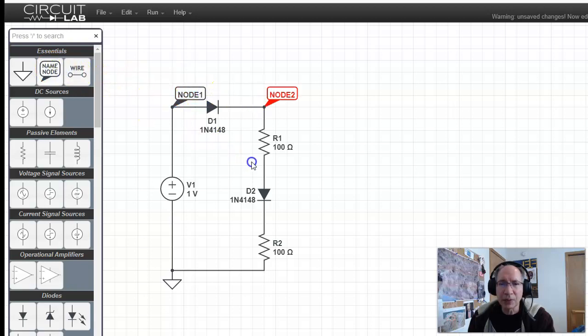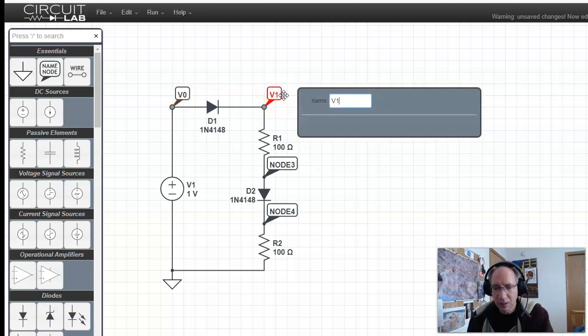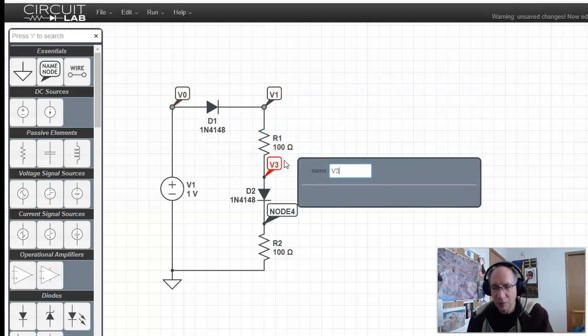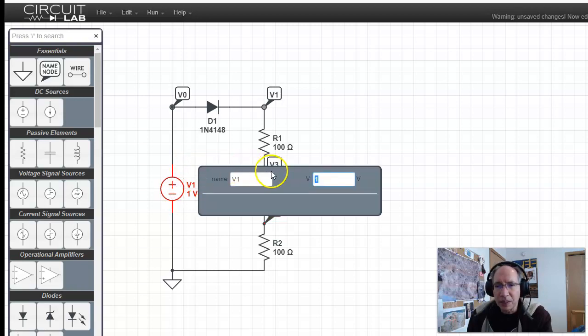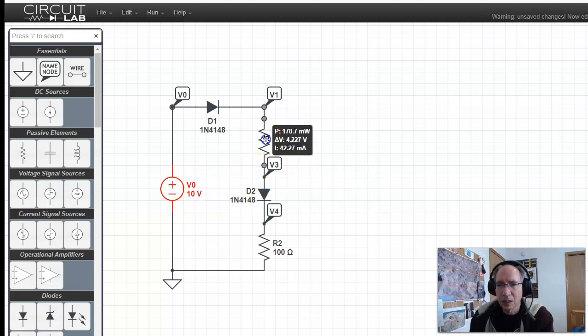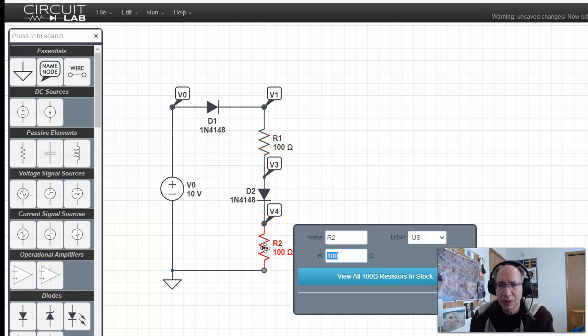You can then add these labels. This is kind of useful later on. And that was V0, V1, V3, V4. Double-click on that. This is a 10-volt source. I called it V0. There's 100 ohms, 200 ohms.